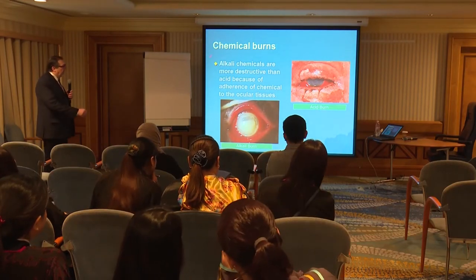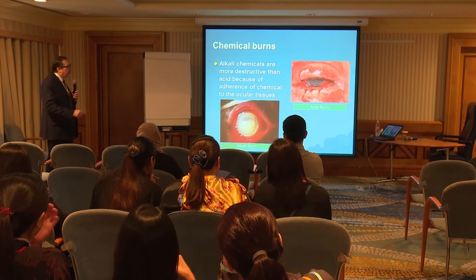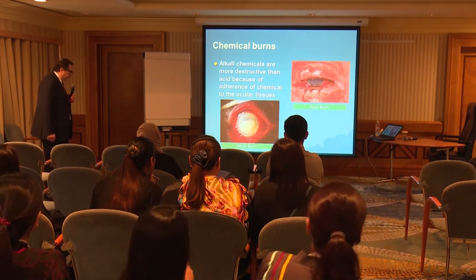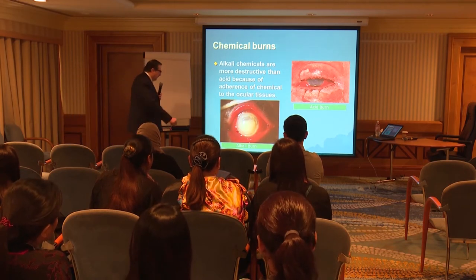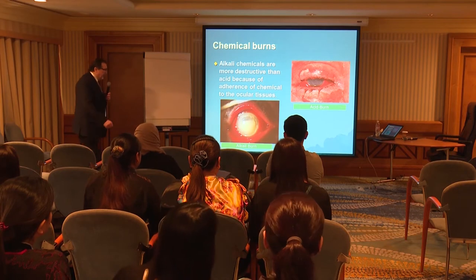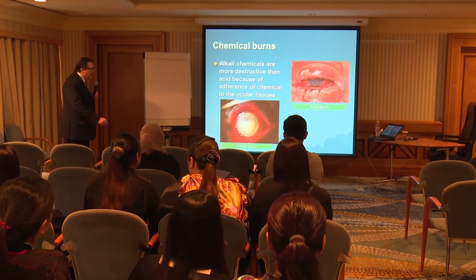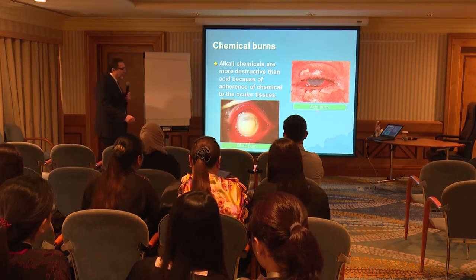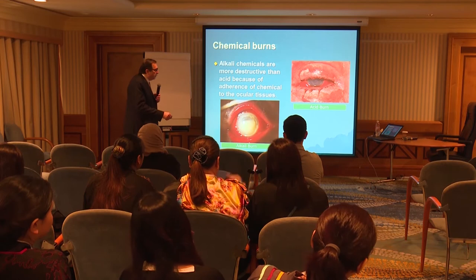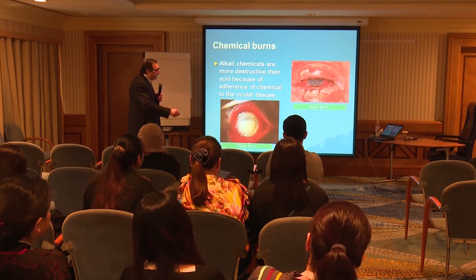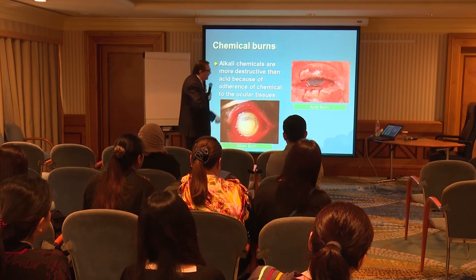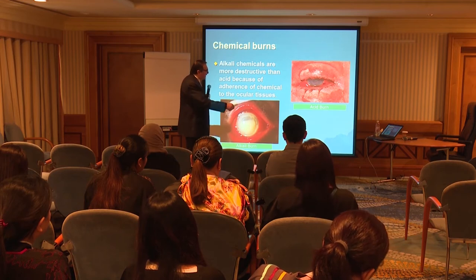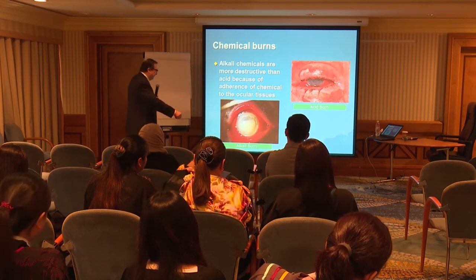In chemical burns, alkali burns are more destructive and more dangerous than acids because of the adherence of the chemical to the ocular tissue. We have two pictures for alkali and acid burns. The alkaline burn shows the cornea is totally damaged, with damage to the conjunctiva and upper and lower lids. The acid burn picture shows damage to the conjunctiva, but the cornea is still in good shape — you can still see the iris behind the cornea.